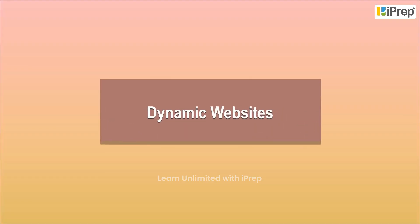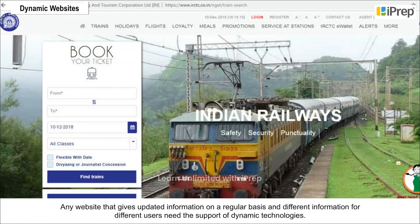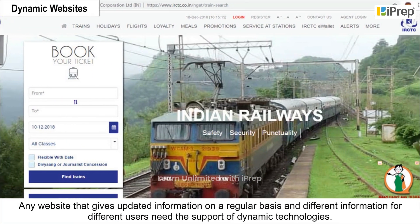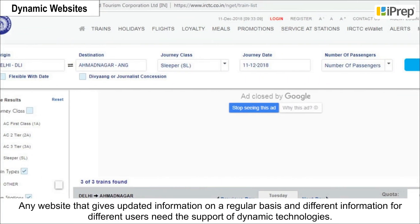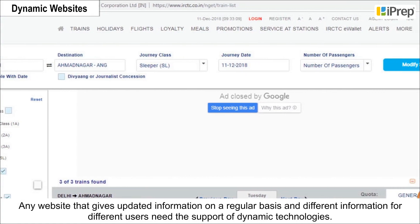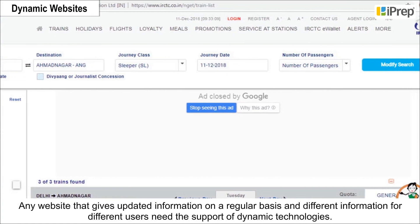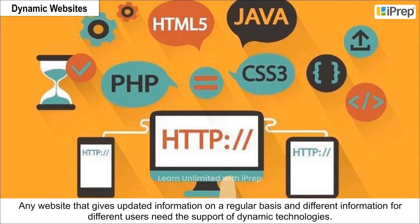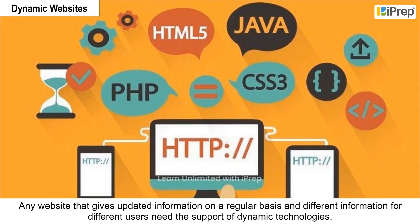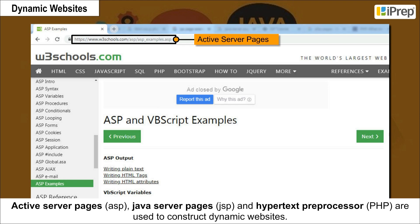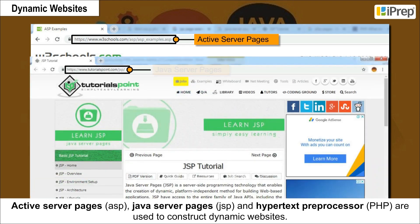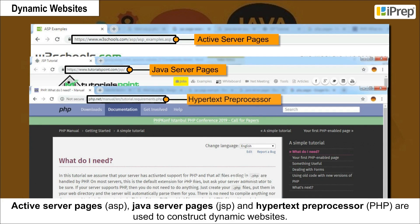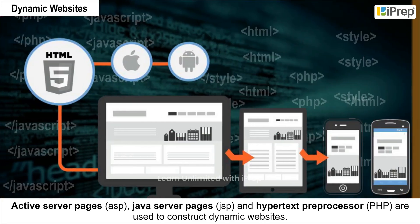Dynamic websites — any website that gives updated information on a regular basis and different information for different users — need the support of dynamic technologies. Active Server Pages (ASP), Java Server Pages (JSP), and Hypertext Preprocessor (PHP) are used to construct dynamic websites.